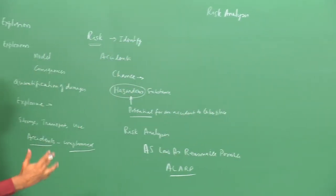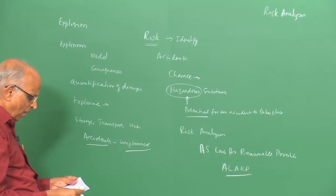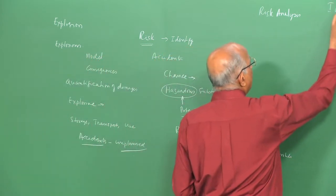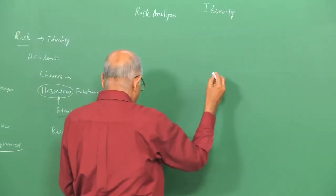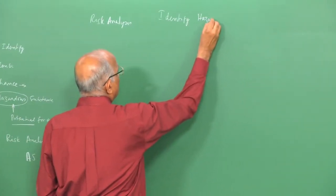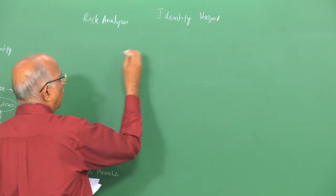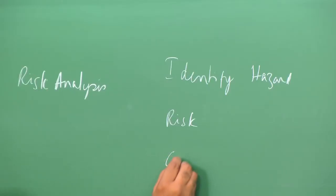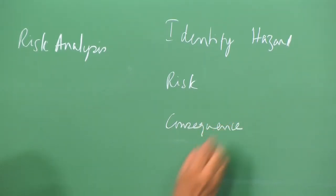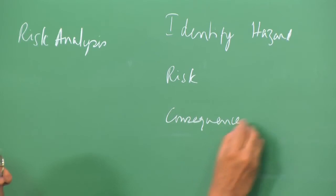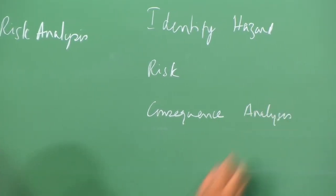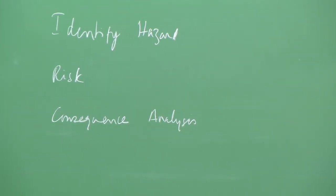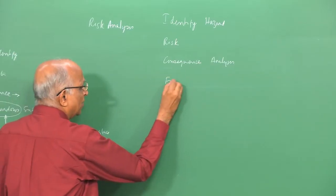There are different types of risk analysis. For instance, you need to identify the potential for causing an accident — identify the hazard. We also need to carry out precise quantification of risk. We should be able to analyze the consequences if an accident does occur. We must also consider the frequency: if an accident can occur more frequently, it leads to more chances of an accident taking place, so a frequency analysis has to be done.